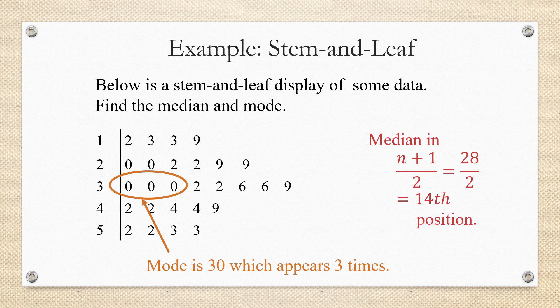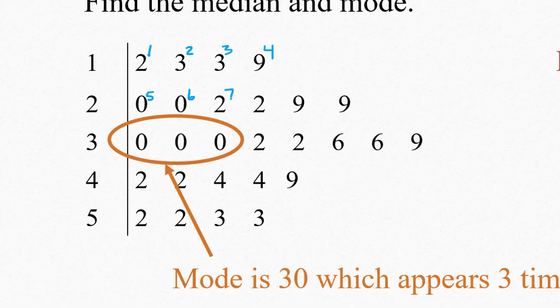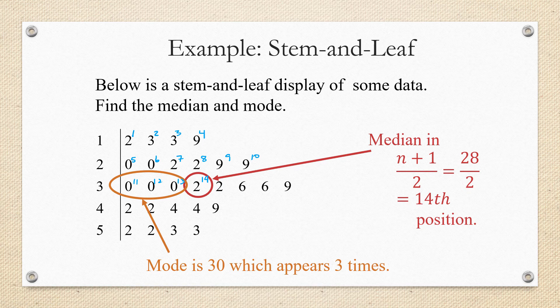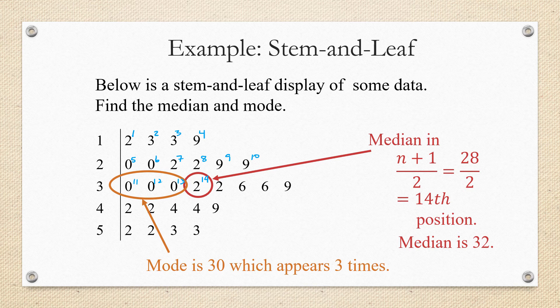So we're going to look through our data values for the 14th position. So we have the 1st position, 2nd, 3rd, 4th, 5th, 6th, 7th, 8th, 9th, 10th, 11th, 12th, 13th, and 14th position. So we have found the number in the 14th position. You might think that's a number 2, but remember the stem represents the tens place. So this is actually the median of 32.